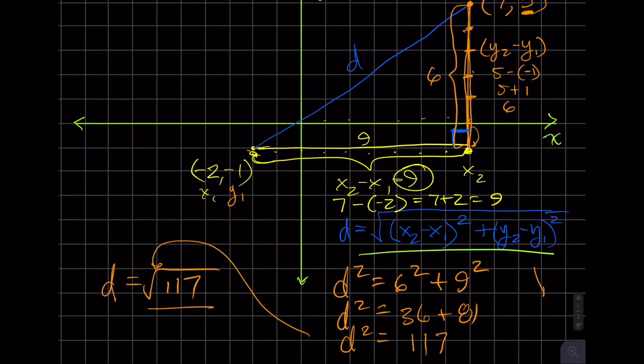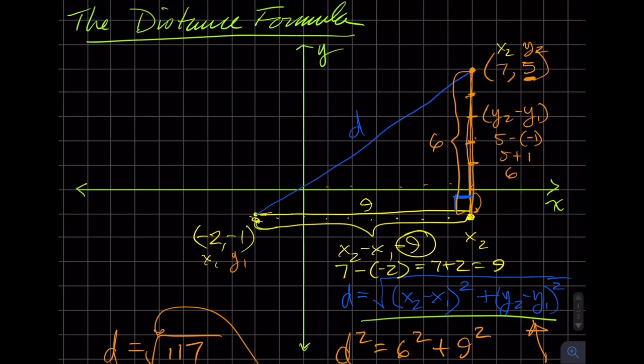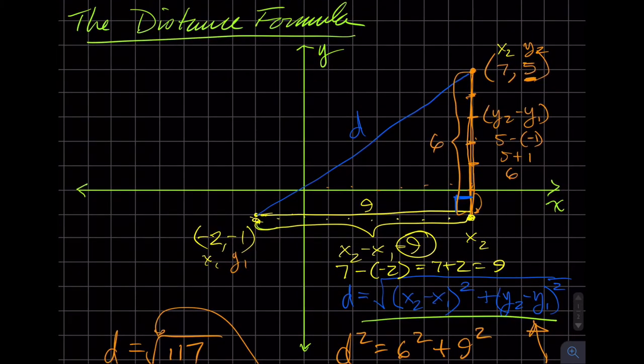...it'd be the same thing as if we substituted values into the blue equation, which is the distance formula. So I would suggest to you, don't worry about memorizing a new quote formula or the distance formula. Just recognize that it is the Pythagorean theorem and figure out the horizontal distance between the two by subtracting the x's, and the vertical distance between the two points by subtracting or finding the difference between the y's.